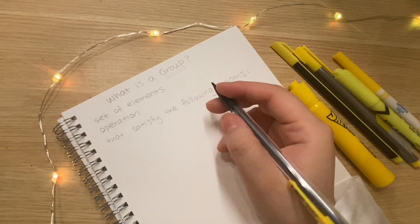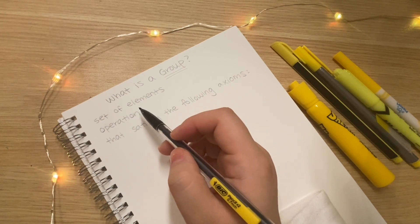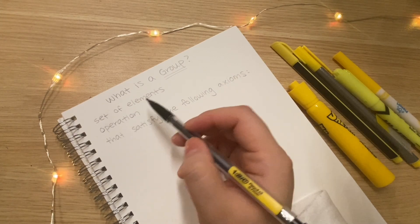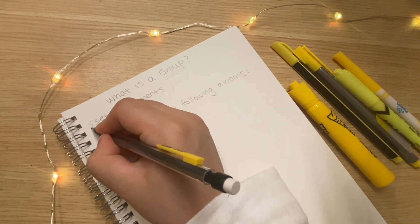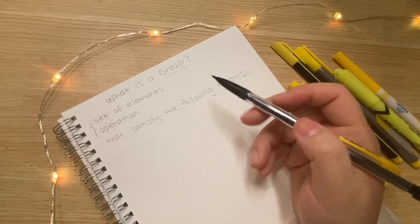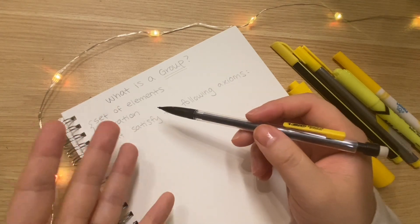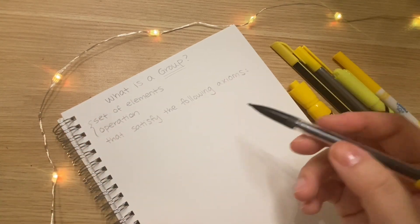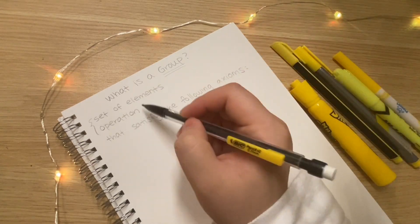So what is a group? A group is a set of elements which we'll talk about along with an operation. So we're going to define these things. And these two together make up a group, as long as they satisfy a few axioms. And there are four in total. So before we get into the axioms, let's look at what this means.